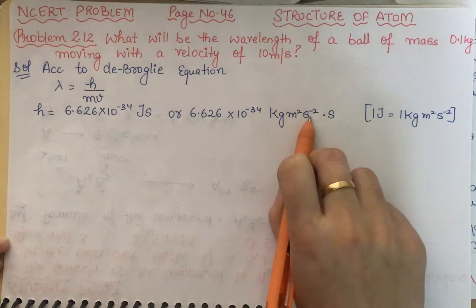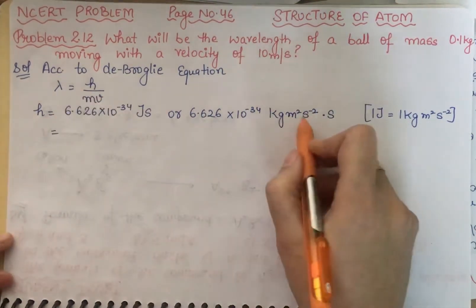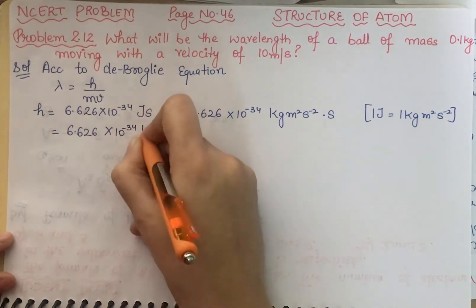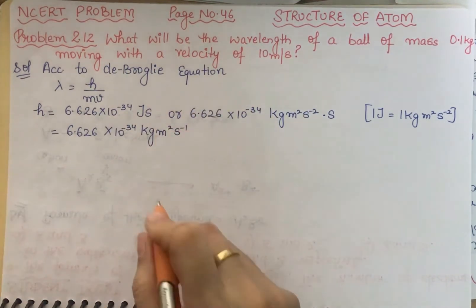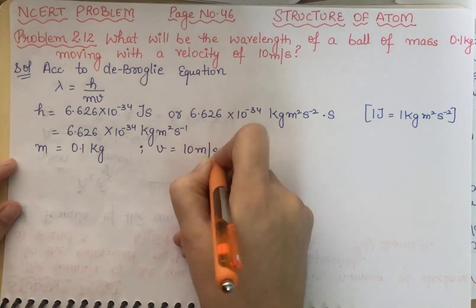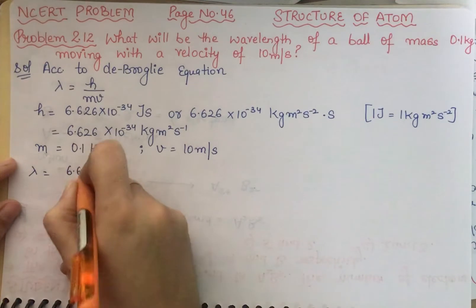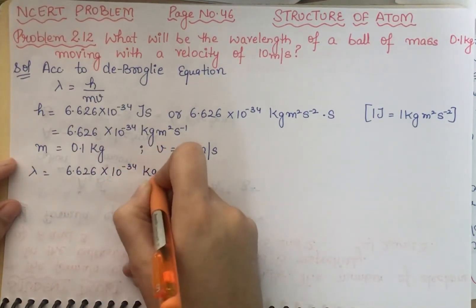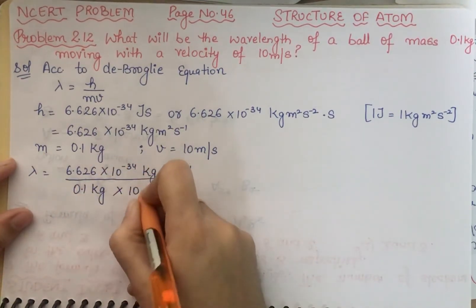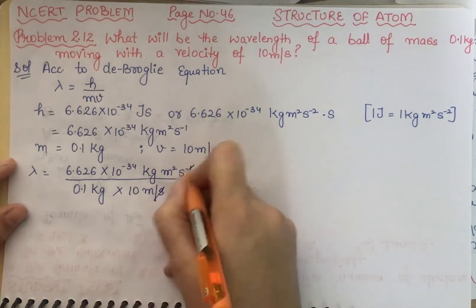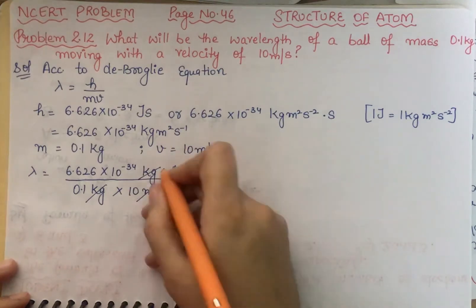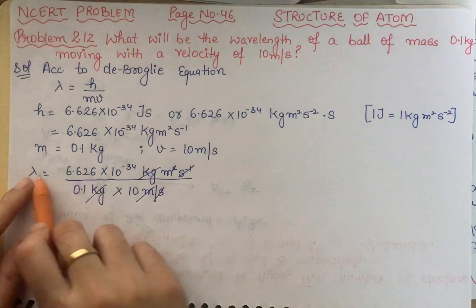Multiplying the second with the joule unit and canceling: one second cancels with one second inverse, leaving 6.626 into 10 raised to power minus 34 kg meter square second inverse. Mass is 0.1 kg and velocity is 10 meter per second. Substituting: lambda equals 6.626 into 10 raised to power minus 34 kg meter square second inverse, divided by 0.1 kg into 10 meter per second. One second inverse cancels, one meter cancels, and one kg cancels, leaving only meter in the numerator.